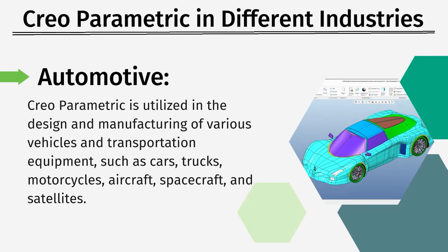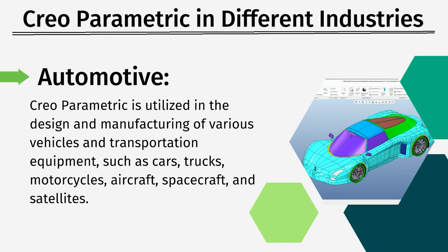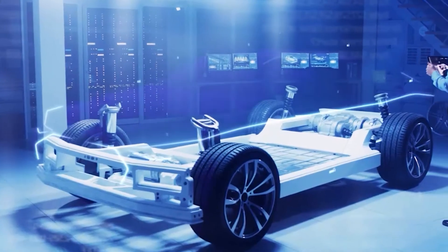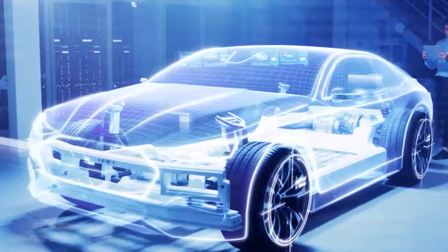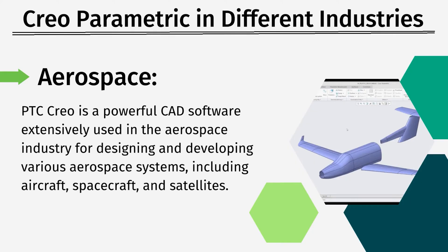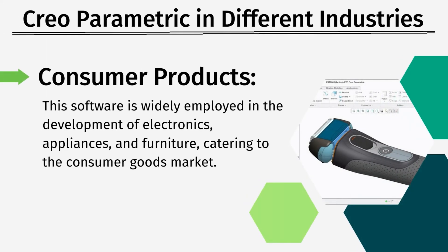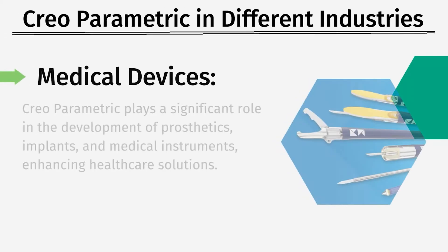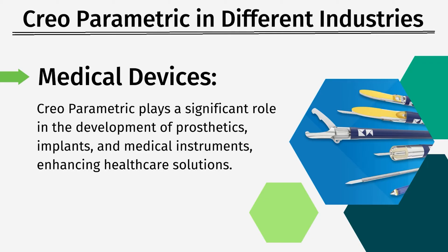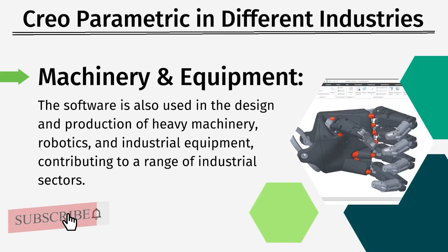Whether you are designing a simple shoe or a missile, you can do that with Creo Parametric. It is used across various industries including automotive — design and manufacturing of cars, trucks, and motorcycles — aerospace for aircraft, spacecraft, and satellites, consumer products such as electronics, appliances, and furniture, medical devices like prosthetics, implants, and medical instruments, and also heavy machinery, robots, and industrial equipment.